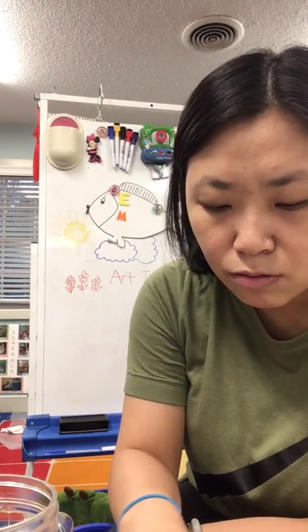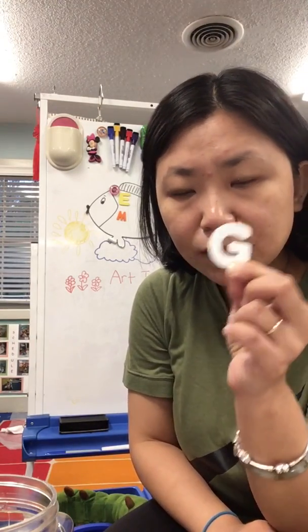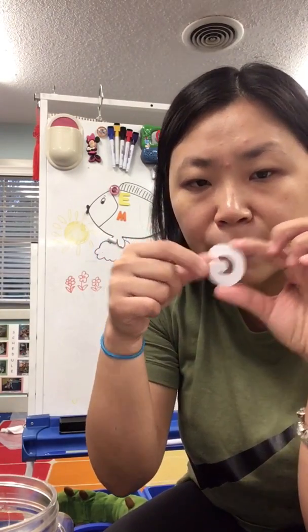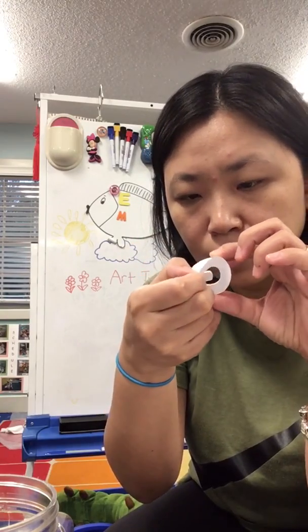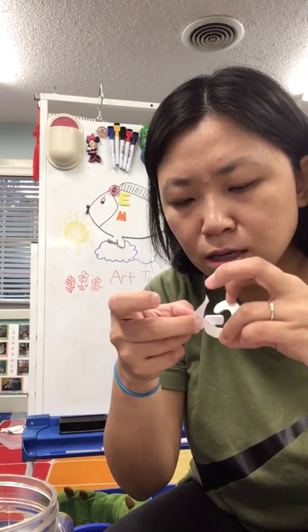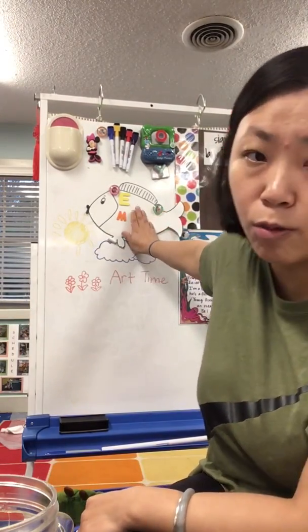What about this letter — who knows what this letter is? This is letter G, and this letter G is white. When I turn it back, the paper on the back is also white, so you need to peel off the paper of letter G and stick it on your fish. What word starts with letter G? What about gorillas — gorillas starts with letter G, good job guys!